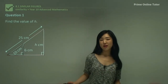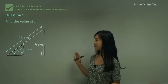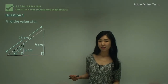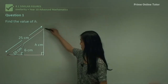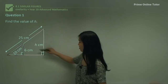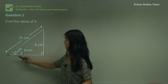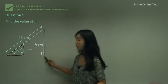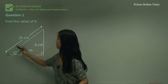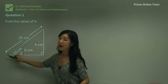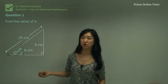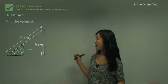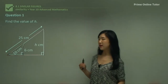Now that I know they're similar triangles, I can use the fact that similar triangles have sides in the same ratio. This side corresponds to this side, this small side corresponds to this side in the larger one, and this is the hypotenuse in the smaller one, and this is the hypotenuse in the larger triangle. So knowing which sides correspond to each other is very important.